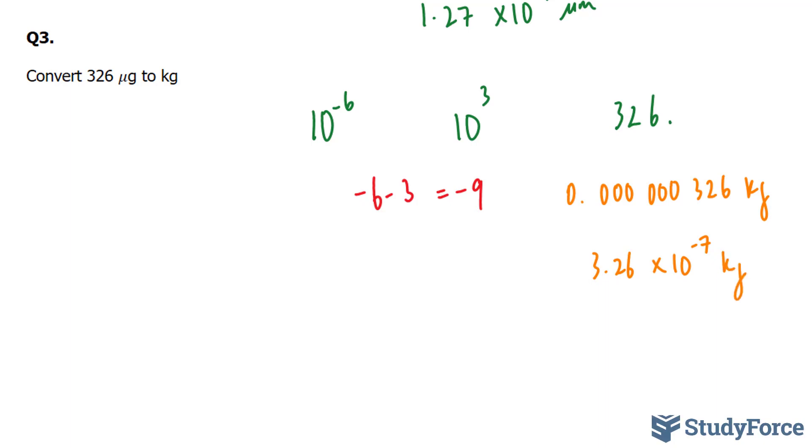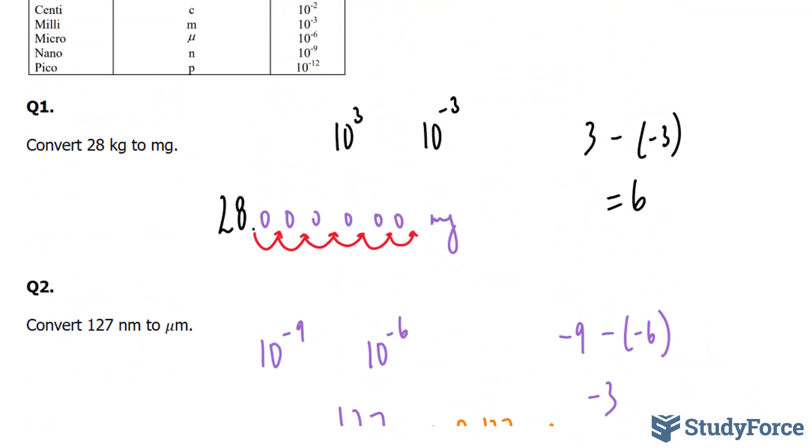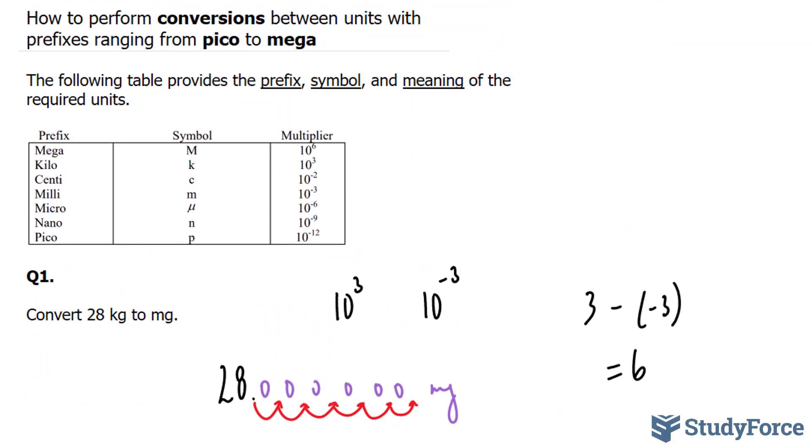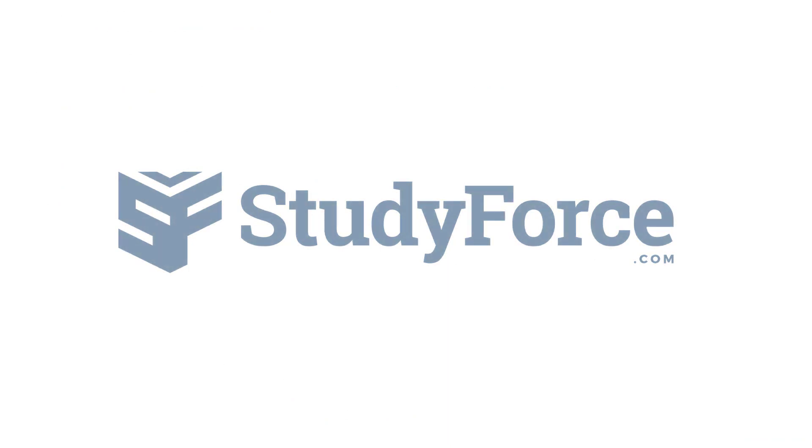And so there you have it. Three examples on how to convert from one unit to another for prefixes ranging from pico to mega. If you found this tutorial helpful, please support our channel by subscribing or by liking this video. If you have any further questions, visit our website at studyforce.com. We're an online service for students seeking free homework help. See you soon.